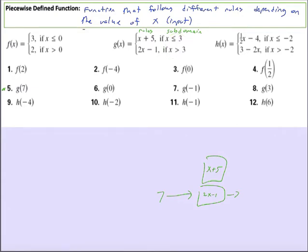For every input, sorry for the input 7, you're going to say, is 7 less than or equal to 3, or is 7 greater than 3? Well, of course, 7 is greater than 3, so we're going to follow this rule. So, to find g of 7, we would take 2x minus 1 and plug our 7 into that, which is 14 minus 1, or 13.